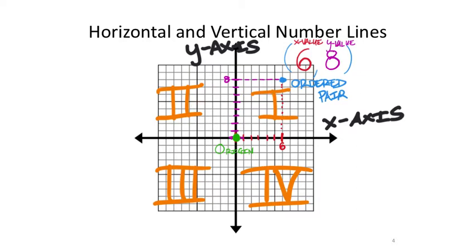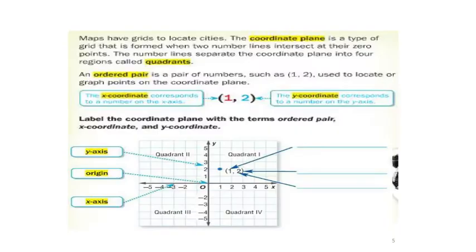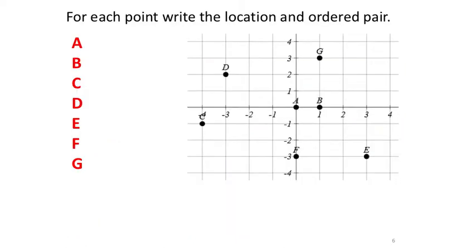We have to identify those — that's part of our objective for the day. We have seven ordered pairs, seven points on the graph: A, B, C, D, E, F, G. We can see them all and just have to determine the location of each point.